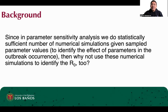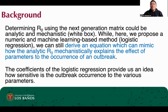Since in parameter sensitivity analysis we run a statistically sufficient number of numerical simulations, what we propose is to utilize these numerical simulations to also identify the R0. In our method, we are going to derive an equation using logistic regression that will represent the basic reproduction number. While we are proposing a numeric and machine learning based method, we can still derive an equation which can mimic how the analytic R0 mechanistically explains the effect of parameters on the occurrence of an outbreak. The coefficients of the logistic regression also provide an idea of how sensitive the outbreak occurrence is to the various parameters.